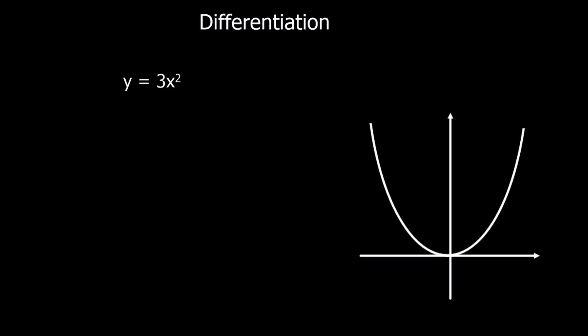This video is about differentiation. Differentiation is the process that we use to find the gradient of a point on the curve. Here I've got a curve y equals 3x squared. If you draw a tangent at different points along the curve, the gradient is different — the gradient changes at different points. So we don't have a set gradient for a curve; we have a gradient function. And that's what differentiation gives us.